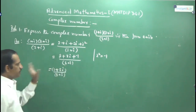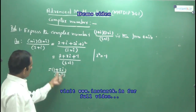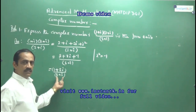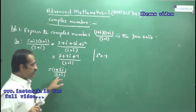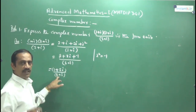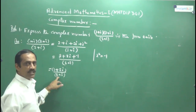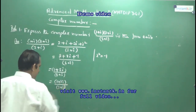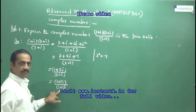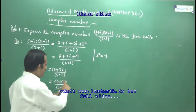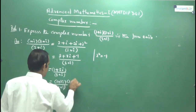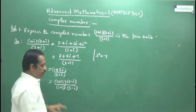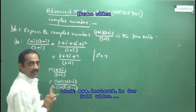Now, when you have more than one term, put brackets. Next, take the conjugate of the denominator: the conjugate of 3 plus i is 3 minus i. Conjugate means changing the sign only — instead of plus you write minus. Multiply numerator and denominator by 3 minus i. So you get (1 plus 3i) divided by (3 plus i), multiplied by (3 minus i) over (3 minus i). Always put brackets — if you don't, you won't get the answer.